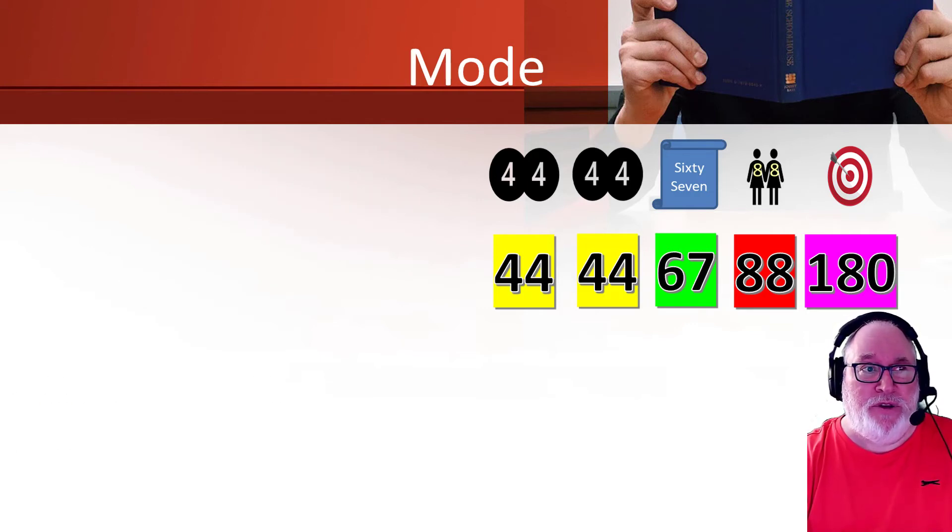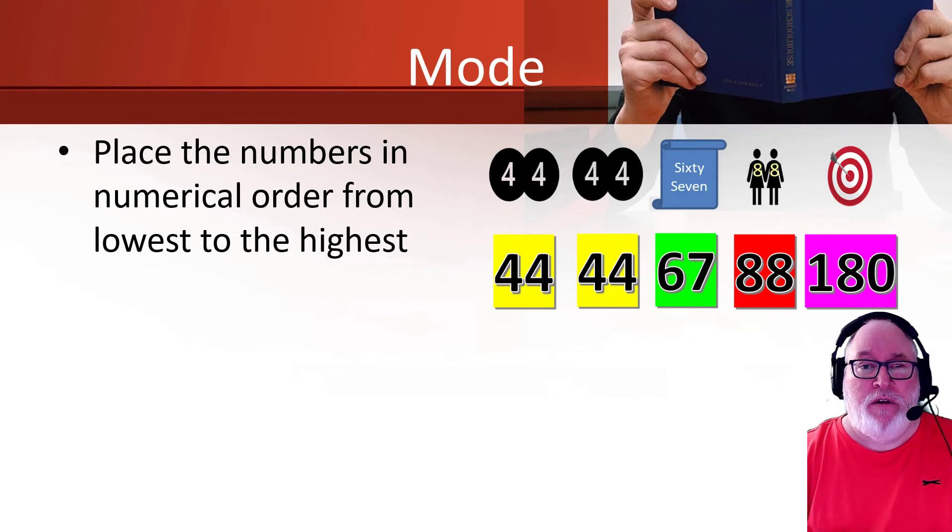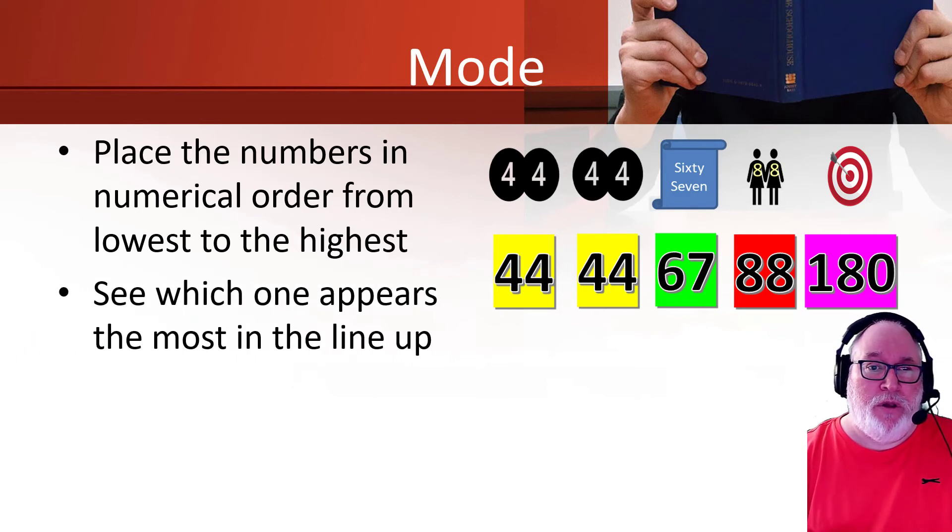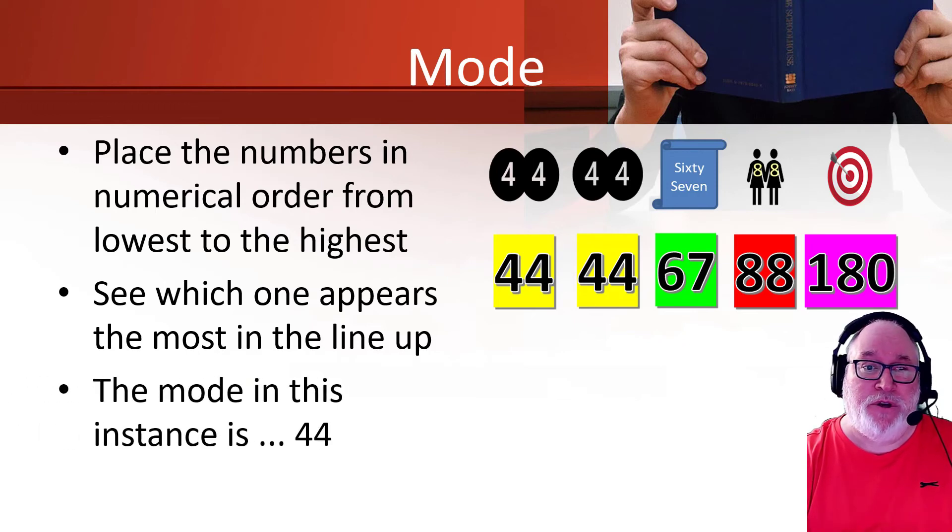Right, with the mode, you place them in numerical order like we have done from the lowest to the highest. So 44 to 180. And you see which one crops up the most. So which one appears the most. So obviously when we're looking there, 44 appears twice. So therefore, 44 is your mode.